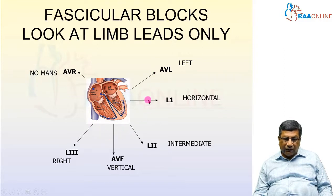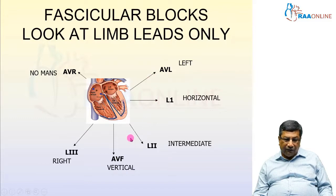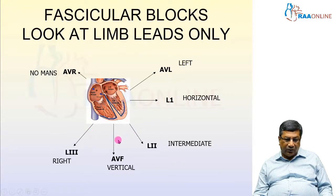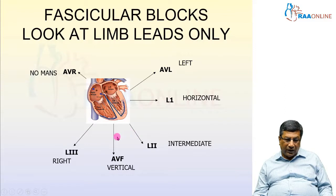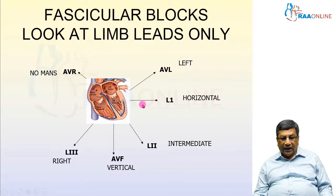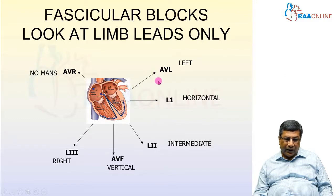To diagnose fascicular blocks, there are only five leads we are going to use — we are not going to use AVR. We group leads into two sets: the inferior and right-sided leads — L2, AVF, and L3 — and the superior and left-sided leads — L1 and AVL. Fascicular blocks are going to produce significant changes in these inferior/right-sided and superior/left-sided lead groups.